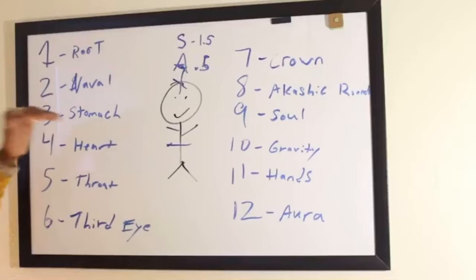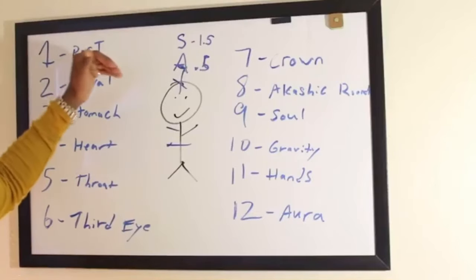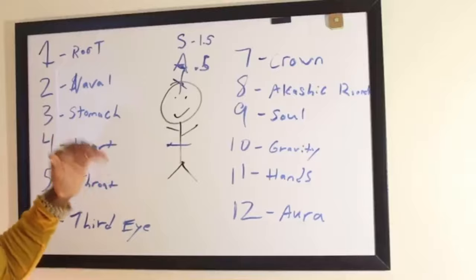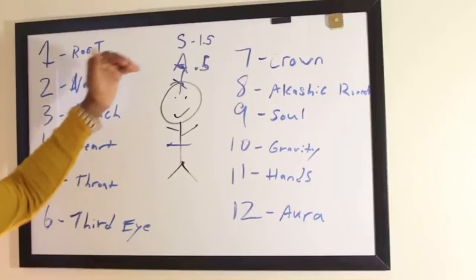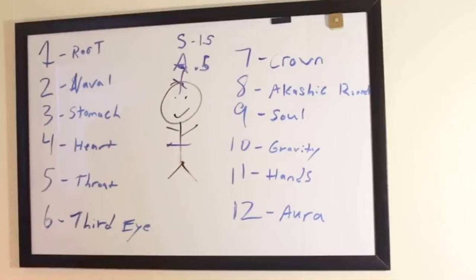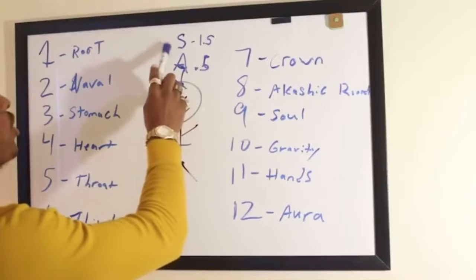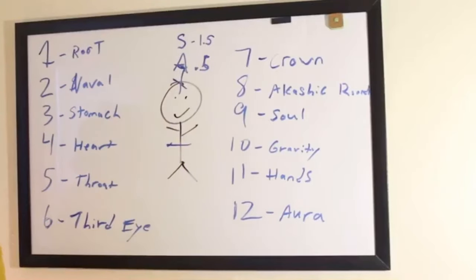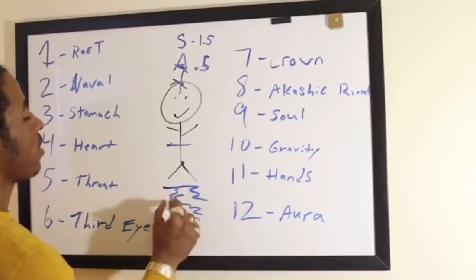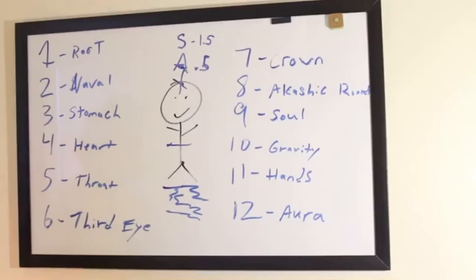I broke down the color correspondences of all seven levels of the chakras in my first video, Seven Levels of Existence, and I'm going to be breaking down the colors of chakras 8 through 12 momentarily after I'm done introducing them. The 9th chakra is your soul. The 10th chakra is gravity — because if you don't know, gravity is a chakra.